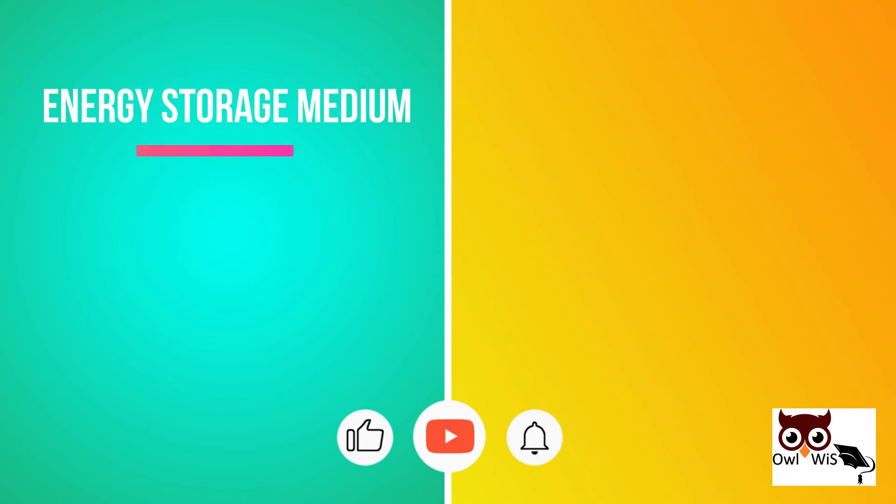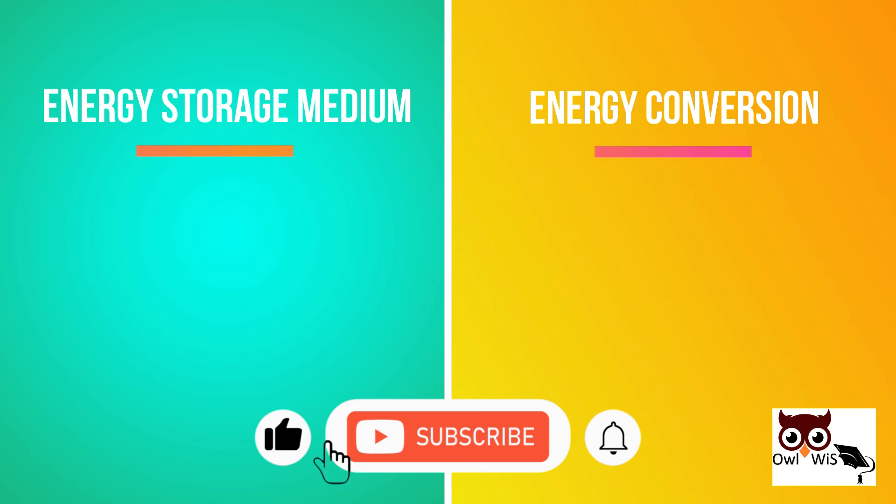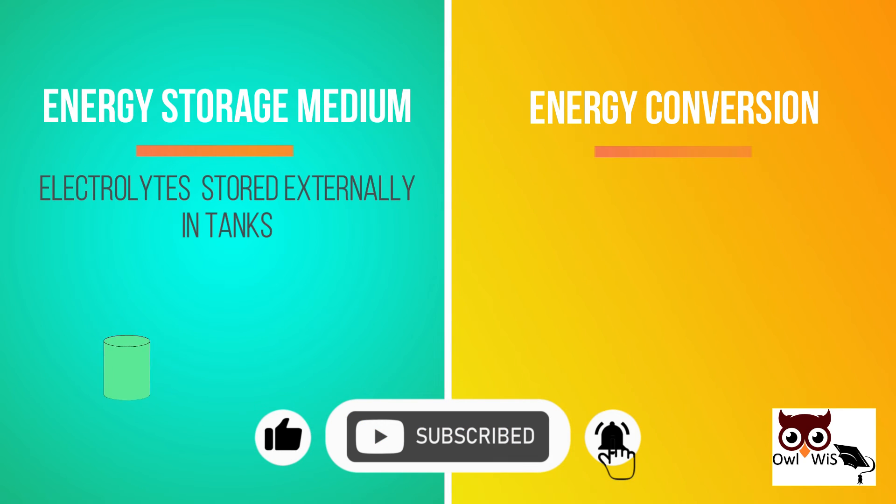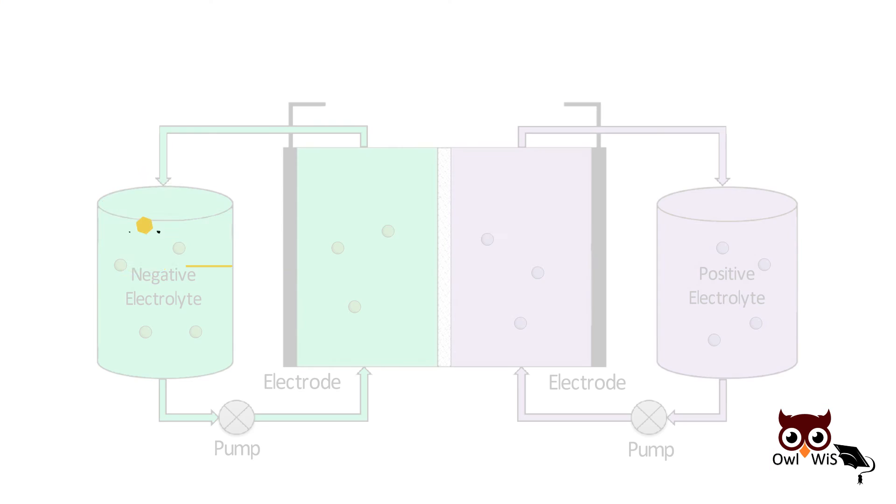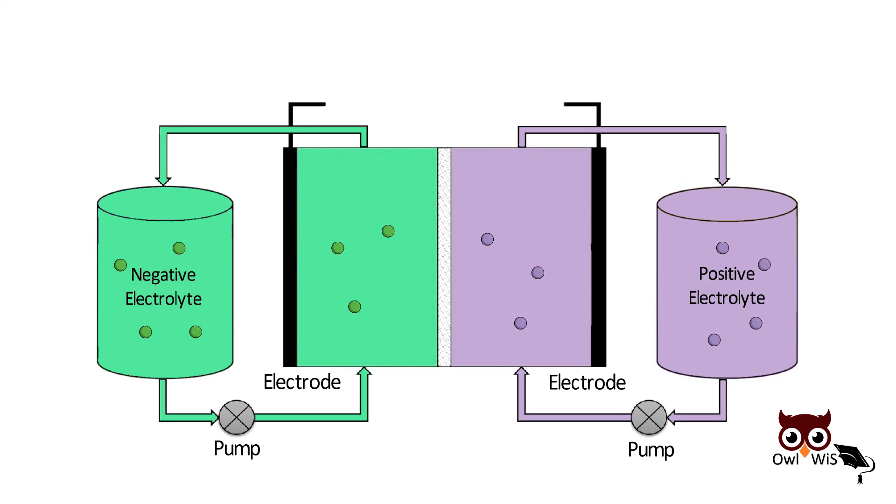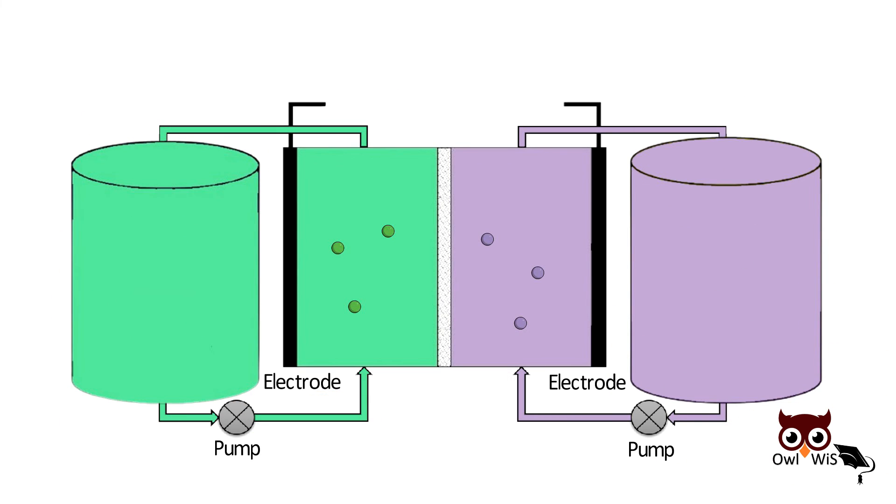Flow batteries separate the energy storage medium and energy conversion. Electrolytes are stored externally in tanks while the electrochemical cell handles energy conversion. If you want to store more energy, you just make the electrolyte tanks bigger.